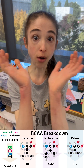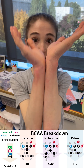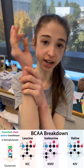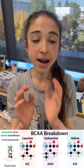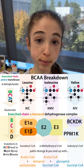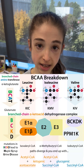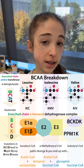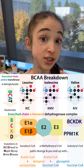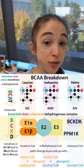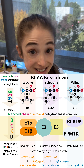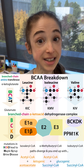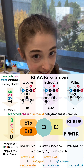Not only do these all have branches in their side chains, but they actually all go through the same breakdown process. They use this complex called the branched chain alpha-keto acid dehydrogenase complex, or BCKD.